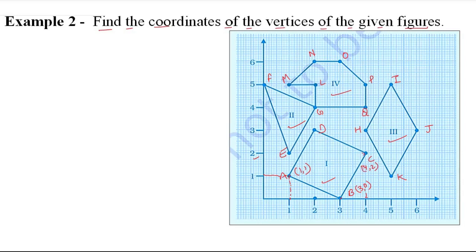For point E: x-axis is 1 and y-axis is 2, so E is (1,2). For point F: it's on the y-axis, so it becomes (0,5). For point G: horizontal is 2 and vertical is 4, so G is (2,4). Remember: always write the horizontal value first. For point H: horizontal is 4 and vertical is 3, so H is (4,3).